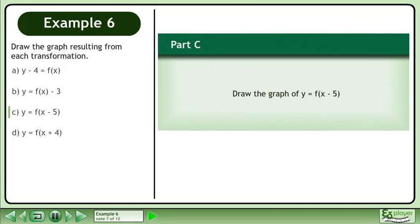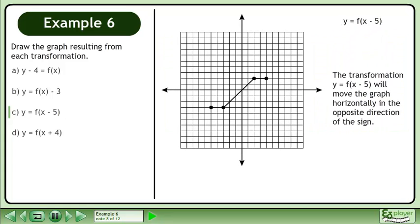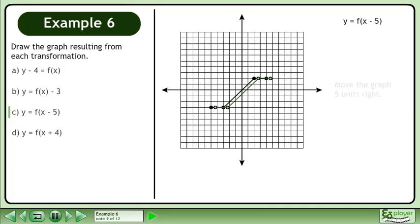In part C, we'll draw the graph of y equals f. The transformation y equals f will move the graph horizontally in the opposite direction of the sign. Move the graph 5 units right.